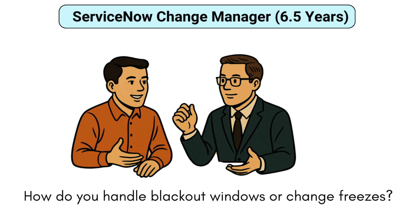How do you handle blackout windows or change freezes? Okay, so blackout windows are planned periods — for example, financial year end — where no changes are allowed because the teams are already busy and we do not want to cause any disruptions. So no changes are allowed to reduce the risk. I plan such calendars in advance and coordinate with the business units to ensure critical changes are done outside those windows. Only emergency changes are allowed during the blackout windows.